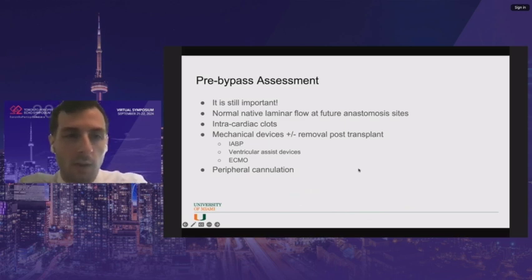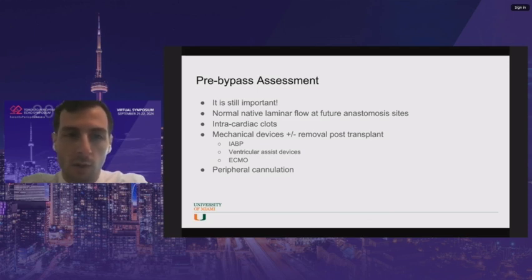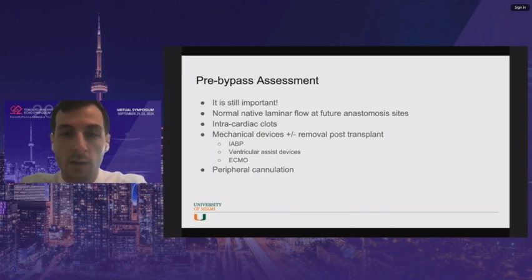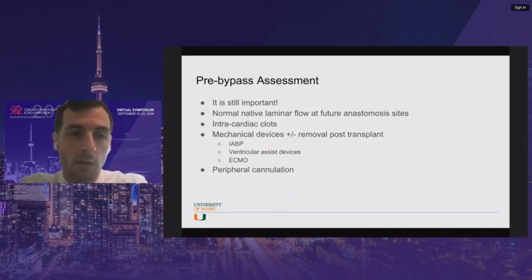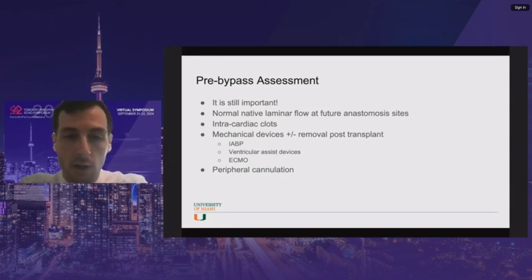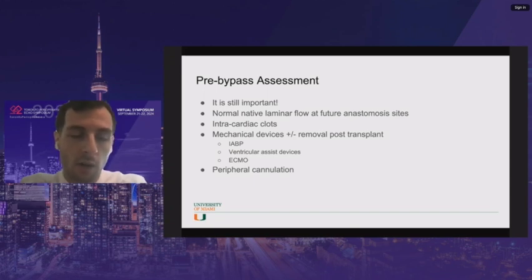For the pre-bypass assessment, it's still important even though the heart is coming out. There's baseline information you need in case there are issues coming off bypass. Key things include confirming laminar flow where anastomoses will be, and checking for intracardiac clots — these patients almost all have heart failure, putting them at higher risk. Finding a clot might change how the surgeon manipulates the heart during explantation to minimize stroke or pulmonary embolus risk.